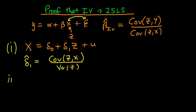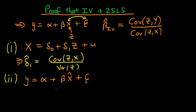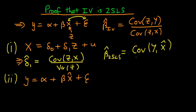Moving on to the second stage: this is essentially the structural equation but estimated using x̂ instead of x, where x̂ is the x predicted using the parameter values found in the first stage. From this we can write out β̂_2SLS, which using the normal form equals the covariance of y with x̂ divided by the variance of x̂.